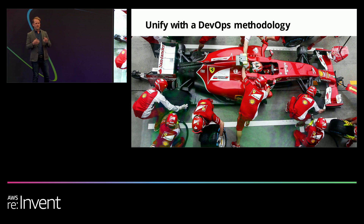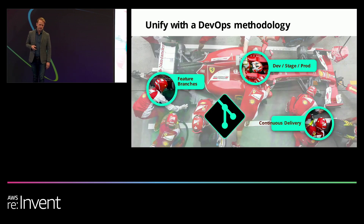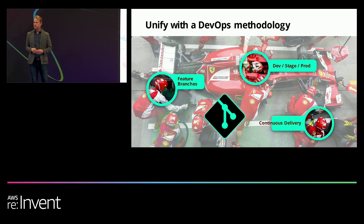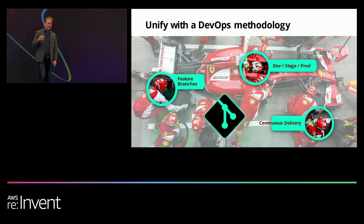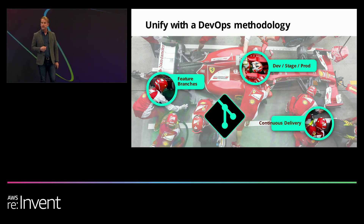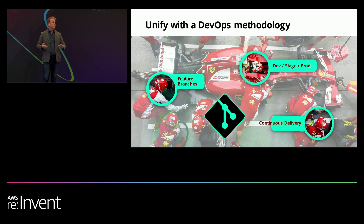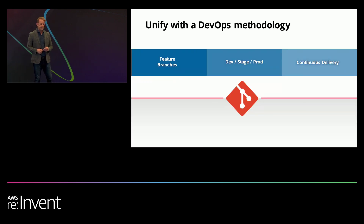The way to unify this with a DevOps methodology is to implement the exact same thing software teams do. You want to go to a dev-stage-prod model with different instances for testing. You want feature branching in your analytics platform. And you want a continuous delivery model where every time somebody changes something, you can test it and make sure it actually produces the analytics you want.